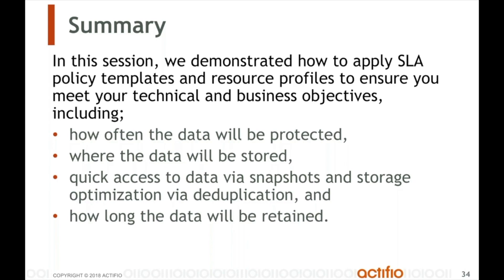Now we take that image — snapshot down to dedupe — and then we're going to replicate it to our remote site. Once we've taken that image, deduped it, and compressed it, when we go to replicate it, we know the information we've already sent across to that site. So we're only going to send anything that is different, just the deltas. Again, we've reduced the amount of information that has to move and be stored at the other location.